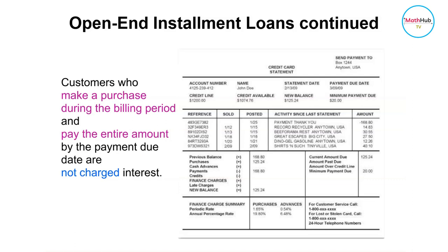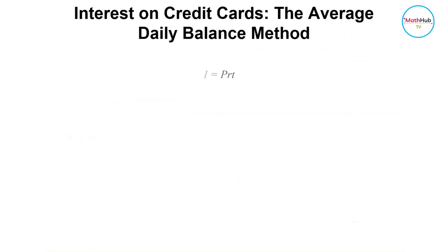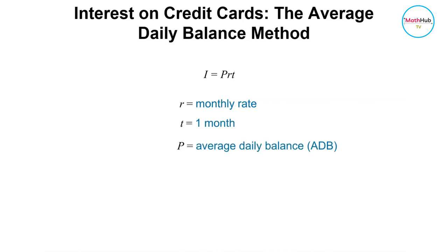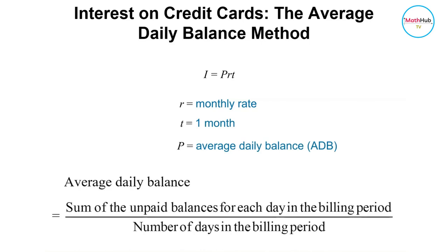Customers who make a purchase during the billing period and pay the entire amount by the payment due date are not charged interest. Interest is calculated using the simple interest formula I = PRT, where R is the monthly rate and T is one month. The principal P is the average daily balance — the sum of all unpaid balances for each day in the billing period divided by the number of days in the billing period.